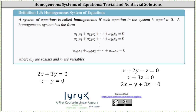Welcome to a lesson on homogeneous systems of equations. A system of equations is called homogeneous if each equation is equal to zero. A homogeneous system has the form shown below, where a sub 1,1 through a sub mn are the scalar coefficients, and x sub 1 through x sub n are the variables. Notice in both example systems, the equations are equal to zero, which is why they are considered homogeneous systems of equations.